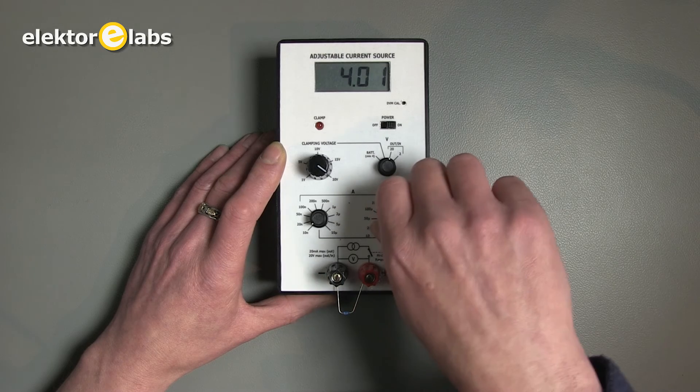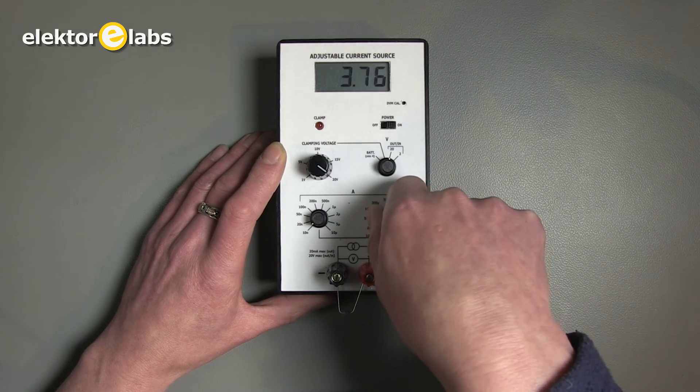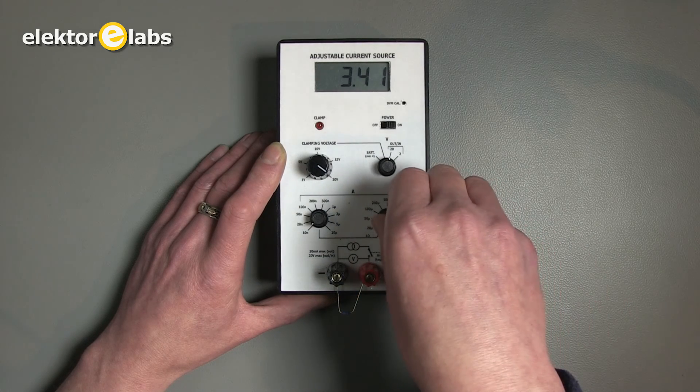When I go back here at 5 milliamps, you can see that the voltage varies as a function of the current flowing through it.